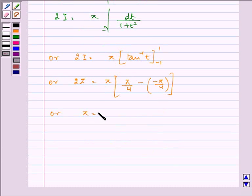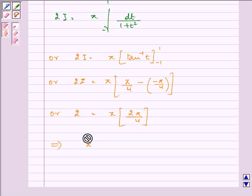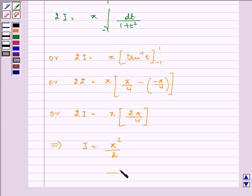So I equals π times (π/4 + π/4) equals π times π/2, which gives I equals π²/2. This is the required answer. Hope you understood it well and enjoyed it too. Have a nice day.